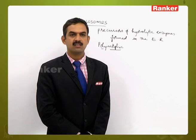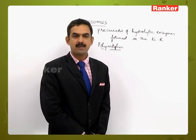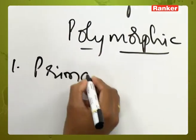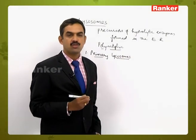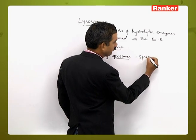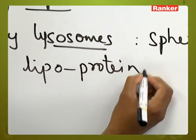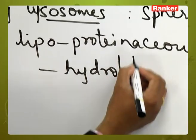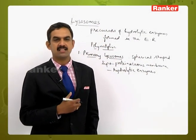Lysosomes are generally polymorphic cell organelles — meaning they exist in more than one morphological organization. Based on morphology and function, three main types are recognized, with a fourth type as well. The first type is called primary lysosomes, which are formed from the endoplasmic reticulum or Golgi complex by forming a membranous structure. They are generally spherical-shaped structures having a single lipoproteinaceous membrane with hydrolytic enzymes inside.